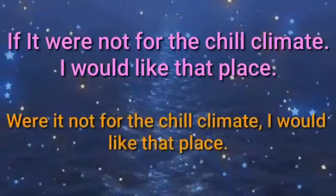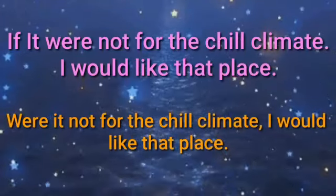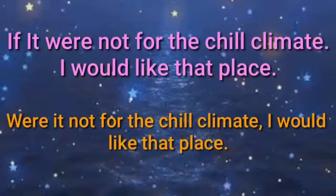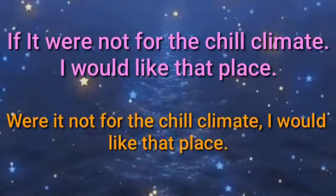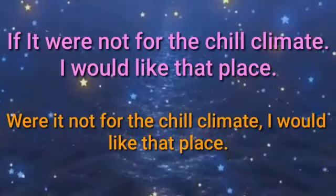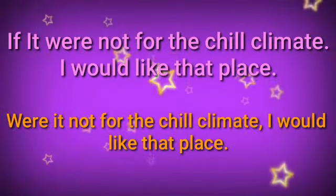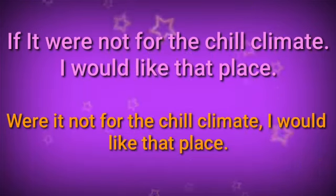Now some exercises. 'If it were not for the chill climate, I would like that place.' In this sentence, no beginner word is given in the bracket, so we take the verb after the subject — the verb here is 'were'. With that 'were', we start the answer: 'Were it not for the chill climate, I would like that place.'